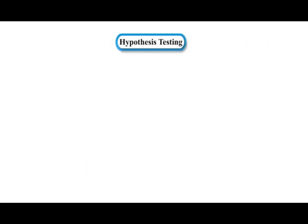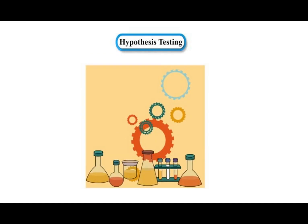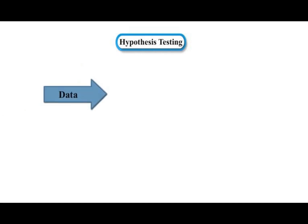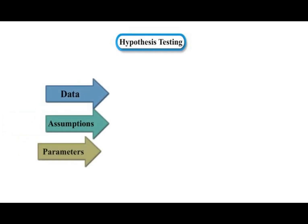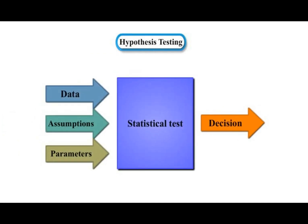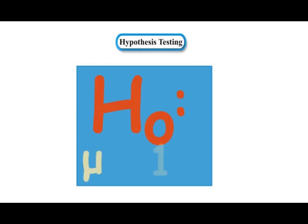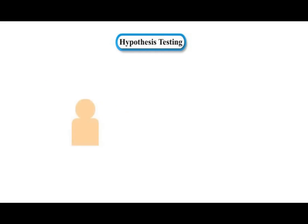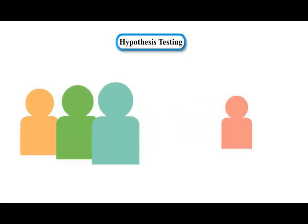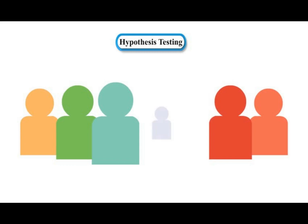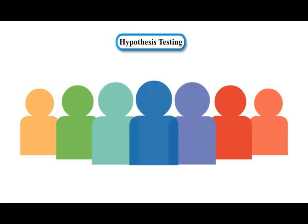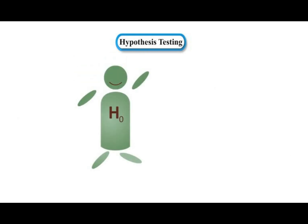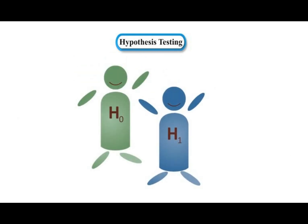Hypothesis Testing is the use of statistics to determine the probability that a given hypothesis is true. A hypothesis test examines two opposing hypotheses about a population: the null hypothesis and the alternative hypothesis.